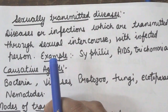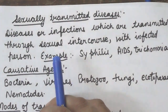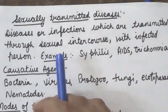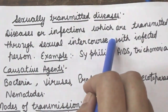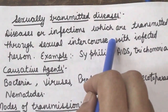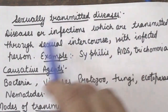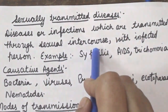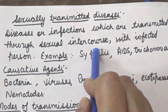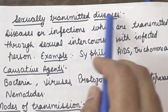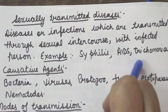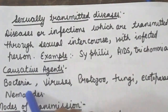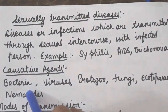Today we will discuss sexually transmitted diseases, or STDs. Diseases or infections which are transmitted through sexual intercourse with an infected person are collectively called sexually transmitted diseases. For example, syphilis, AIDS, trichomonas, and HIV leading to AIDS.